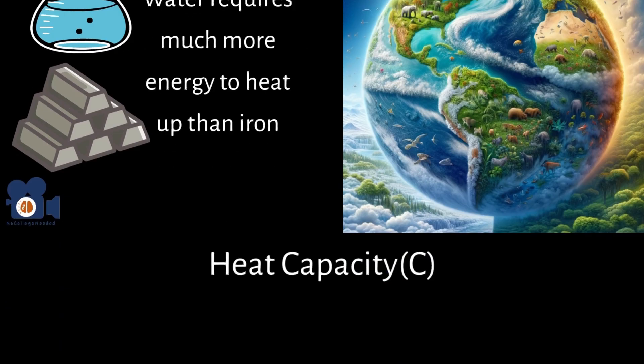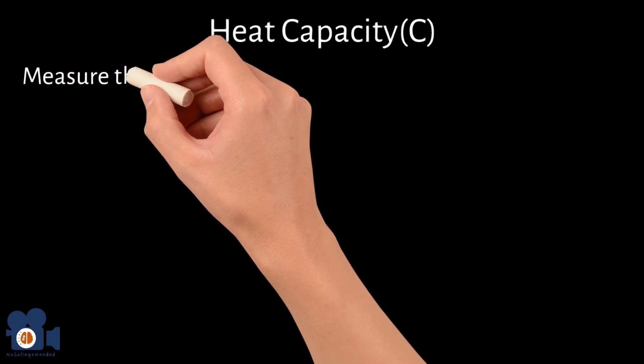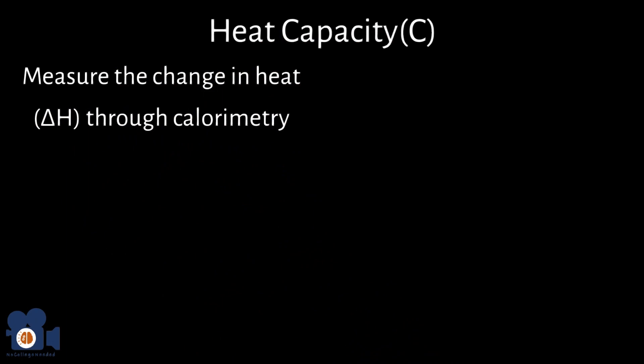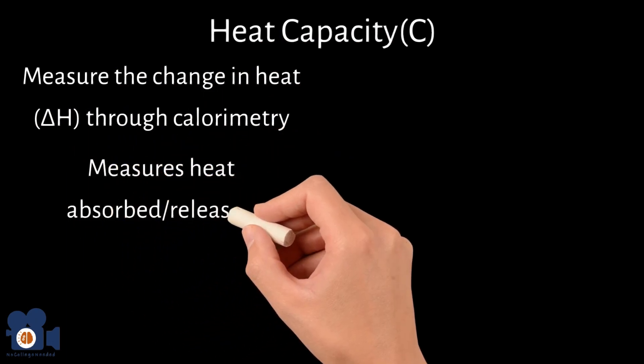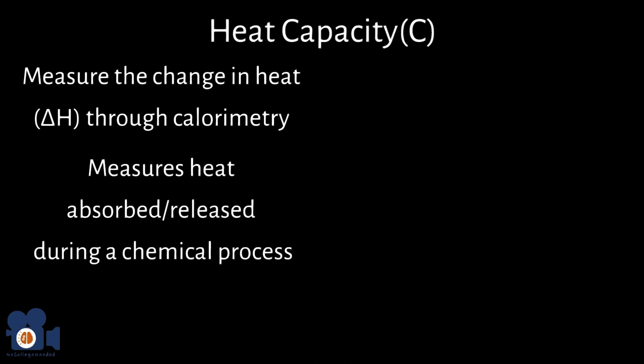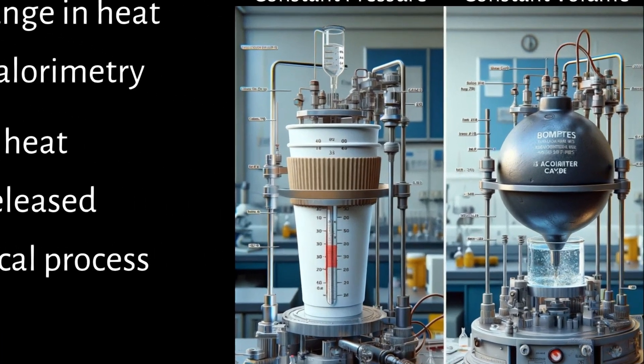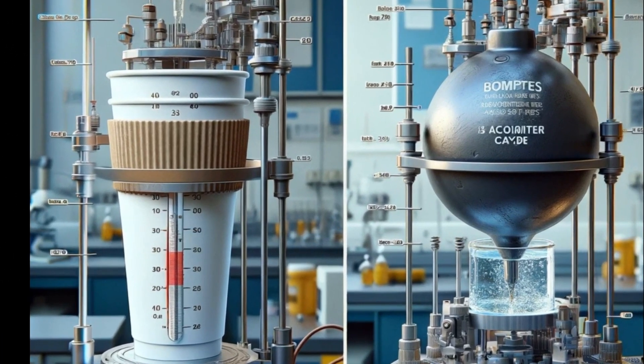Now back to heat capacity. Scientists measure the change in heat, delta H, in chemistry through a process called calorimetry that measures the amount of heat absorbed or released during a chemical process via the use of a calorimeter. There are various types of calorimeters, but the most common ones include a coffee cup calorimeter for constant pressure—remember delta H equals Q or heat when pressure is constant—and a bomb calorimeter for constant volume. In their simplest form, both of these calorimeters consist of a reaction vessel inside a water bath.